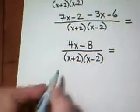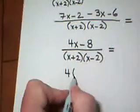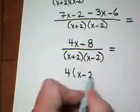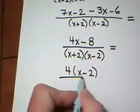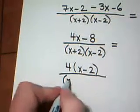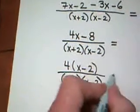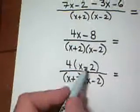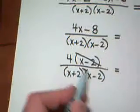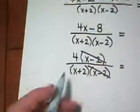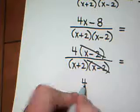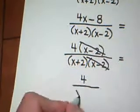In the numerator, when I factor out a 4, I'm left with the quantity x minus 2. That's a different way of writing the top. And the denominator has already been factored. And now notice what happens. The common factors of x minus 2 cancel out. And my final answer is 4 over x plus 2.